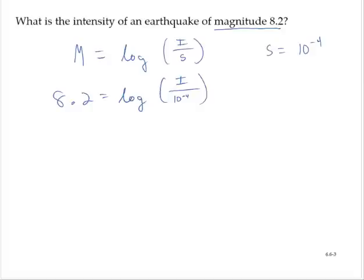We need to remember that the understood base is 10. So we can write 10 to the 8.2 is equal to i over 10 to the negative fourth.